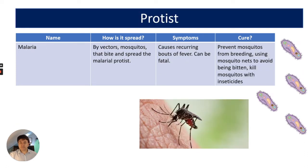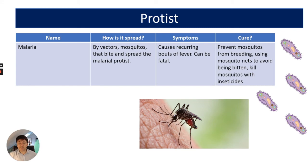The key protist disease is malaria. It's spread by vectors — in this case mosquitoes — which bite and allow the malarial protist to get into the blood. In humans, this causes recurring bouts of fever and can be fatal. Prevention includes stopping mosquitoes from breeding, using mosquito nets to avoid being bitten, or killing mosquitoes with insecticides.